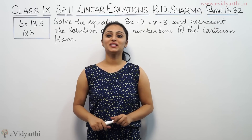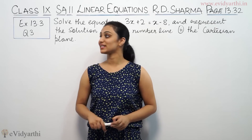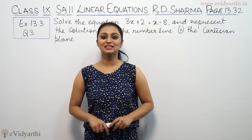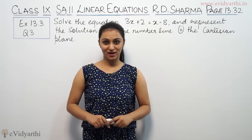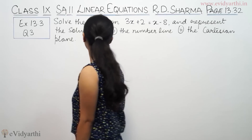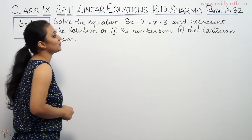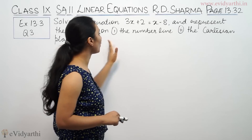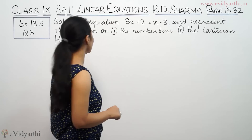Hi, this is Khushbu with another question of linear equations. This is question number 3 from exercise 13.3, page number 13.32 from Ani Sharma. So let us solve the equation 3x plus 2 equals to x minus 8 and represent the solution on the number line and the Cartesian plane.